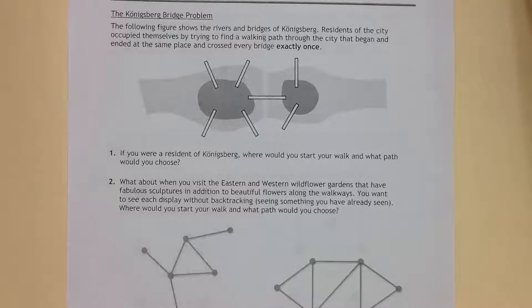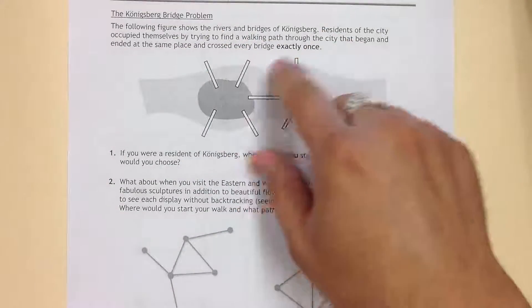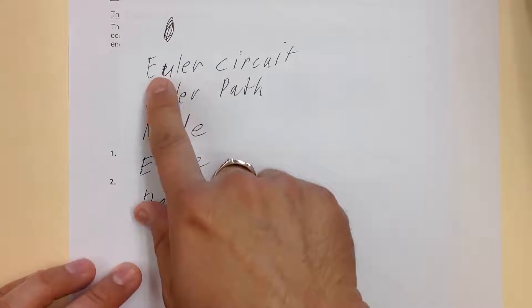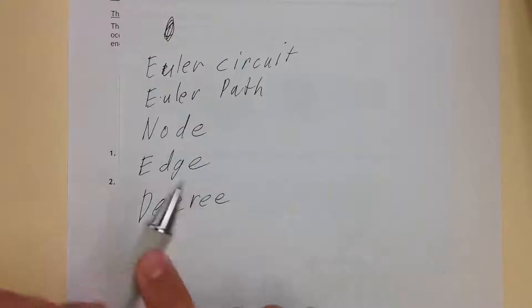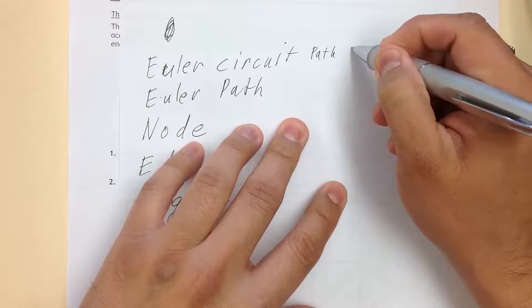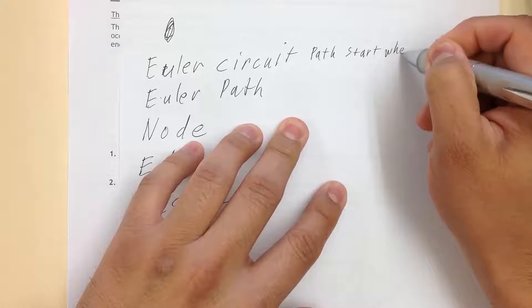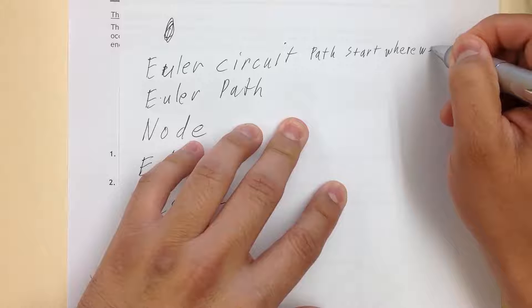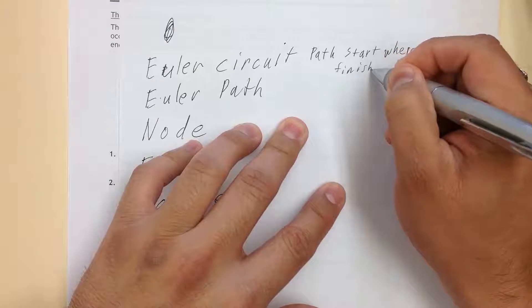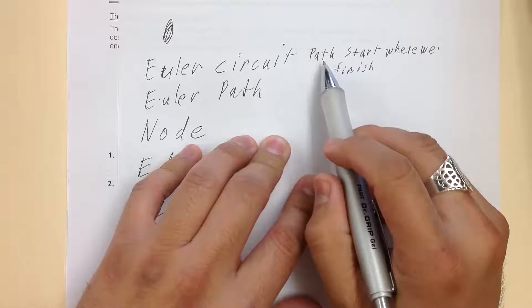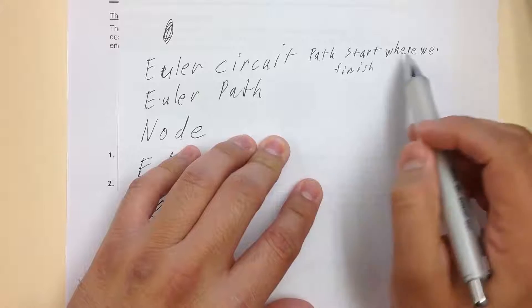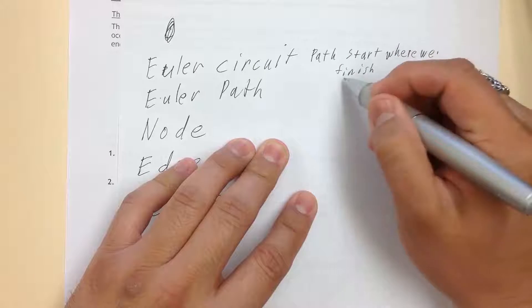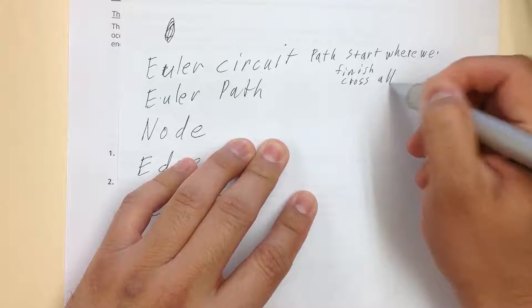Something called an Euler circuit, meaning that we start exactly where we began and we cross every pathway. Here's a bit of vocabulary. Number one is an Euler circuit. That just means that we take a path and we start where we finish. A path that starts exactly where it finishes and crosses all pathways.